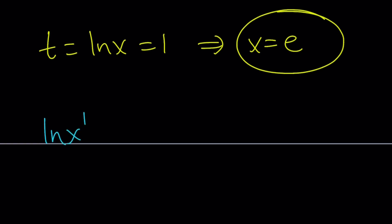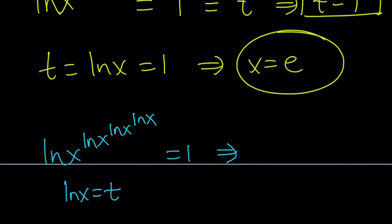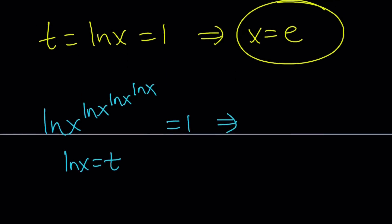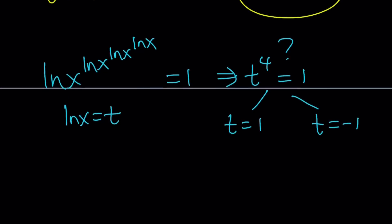Can you directly conclude that this implies, and if I call ln x equals t with my second method, if I called ln x equals t, would this give me t to the fourth equals 1? What do you think? Please let me know. And obviously, this would imply t equals 1 and t equals negative 1, if this were the case. And t equals 1 would imply x equals e, and t equals negative 1 would imply x equals 1 over e. Would those be valid solutions if we had four of these?